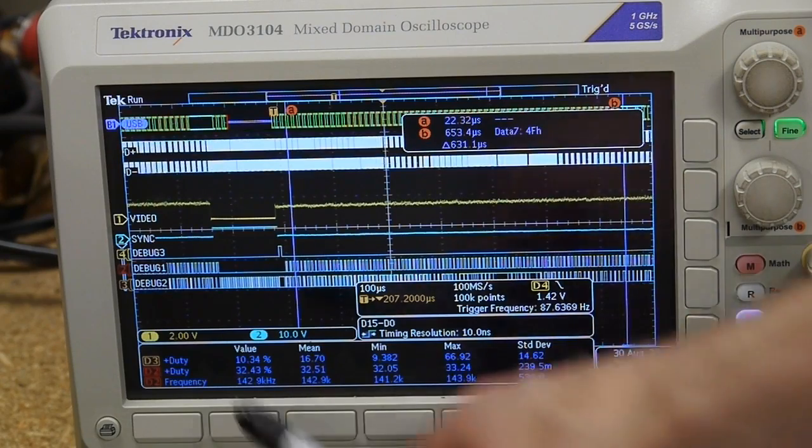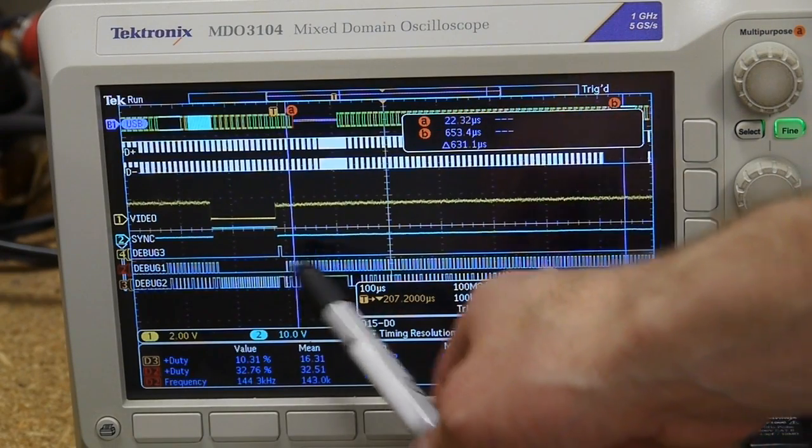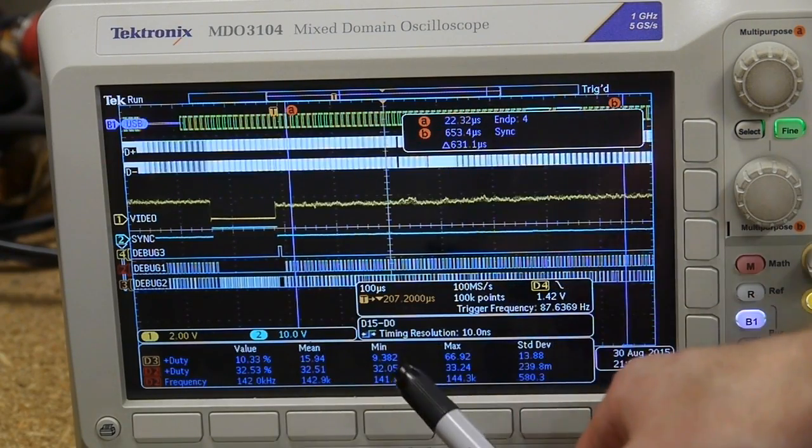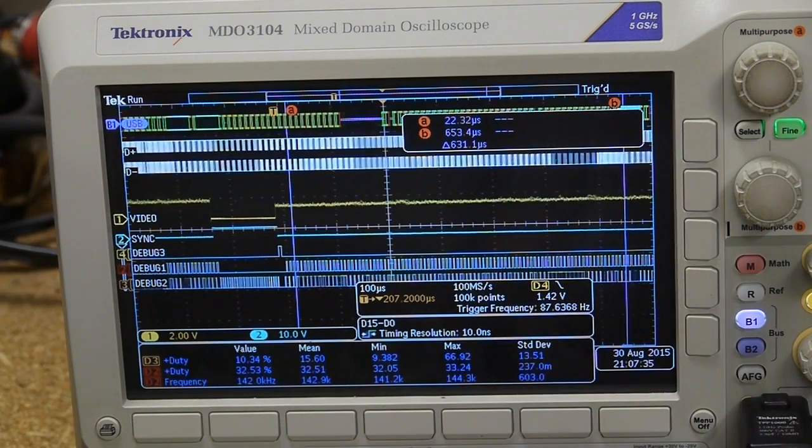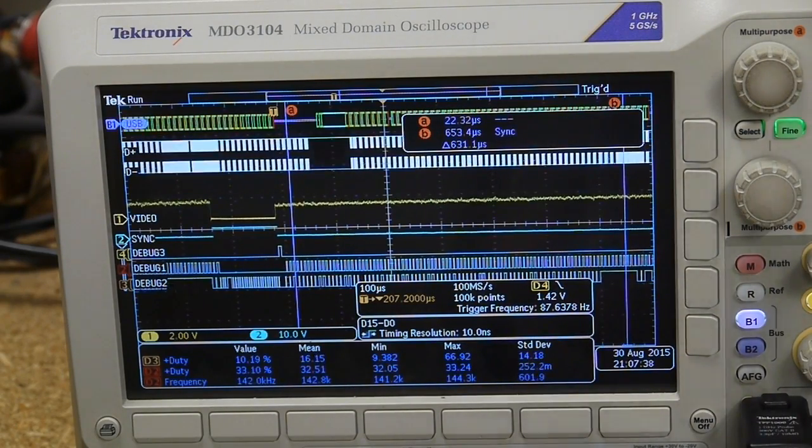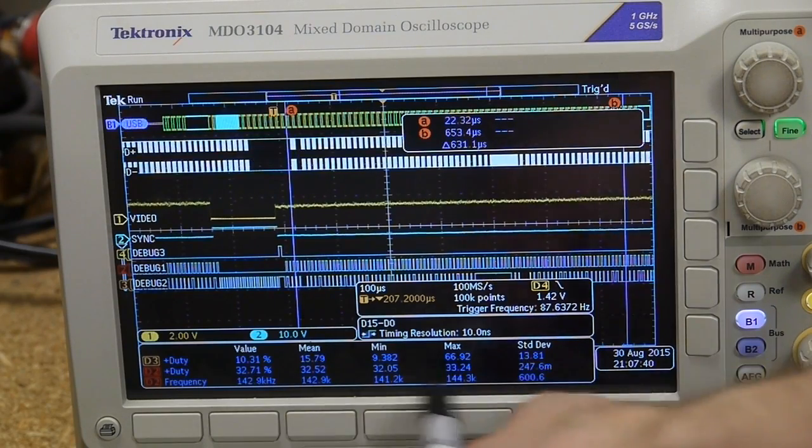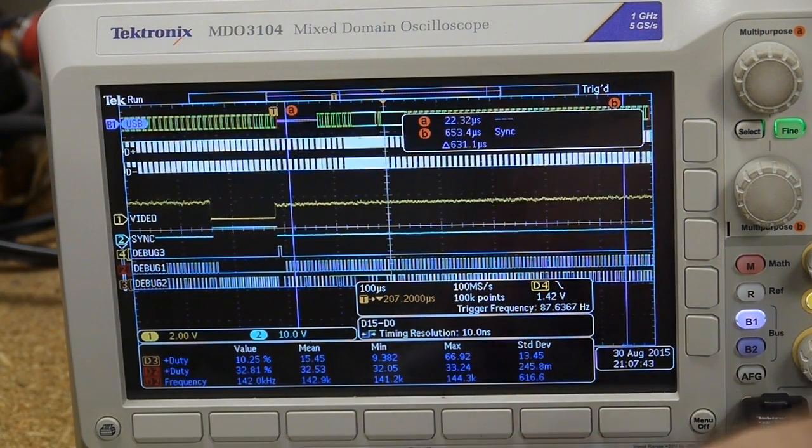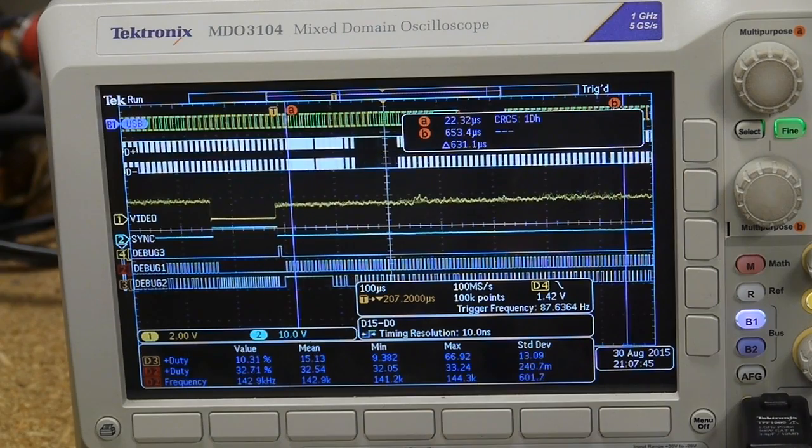If you're really interested in this, you can download the code that I posted, and the comments actually indicate what debug one, two, and three are. Briefly, debug three is the interrupt service routine that handles the sync pulse, debug one is the interrupt service routine that handles the analog-to-digital converter, and debug two is the main loop of the program where we actually send the data out USB.